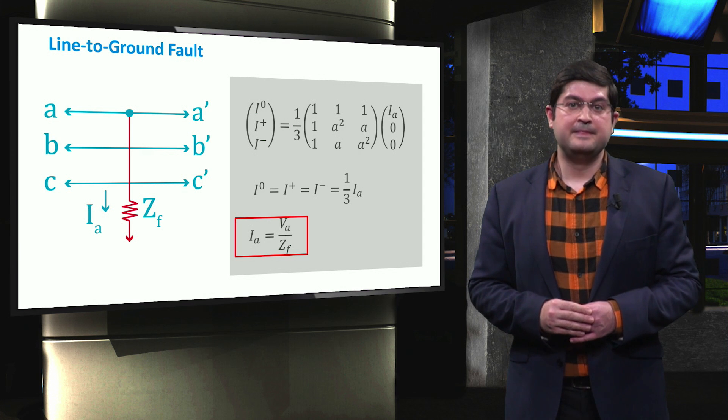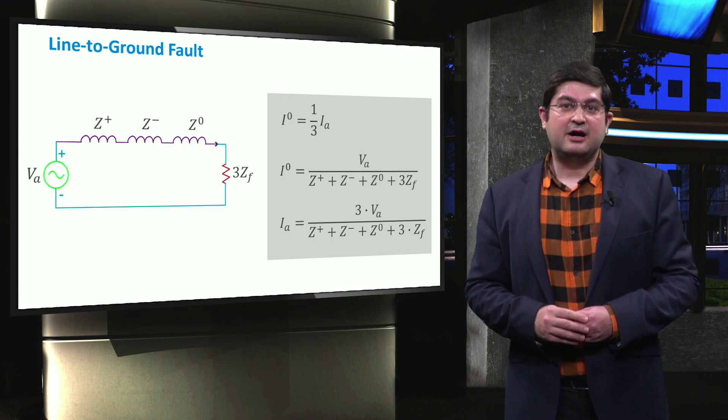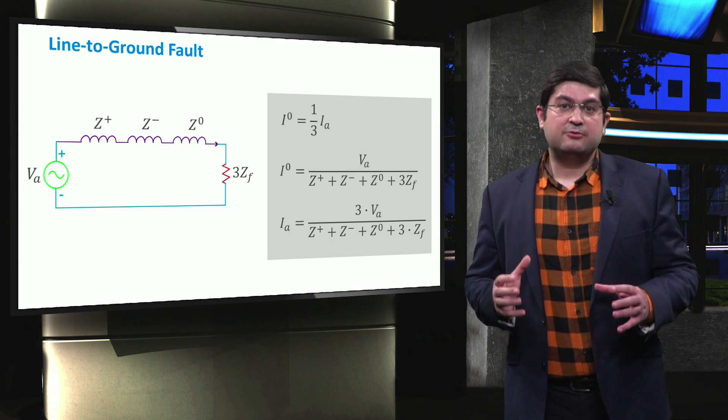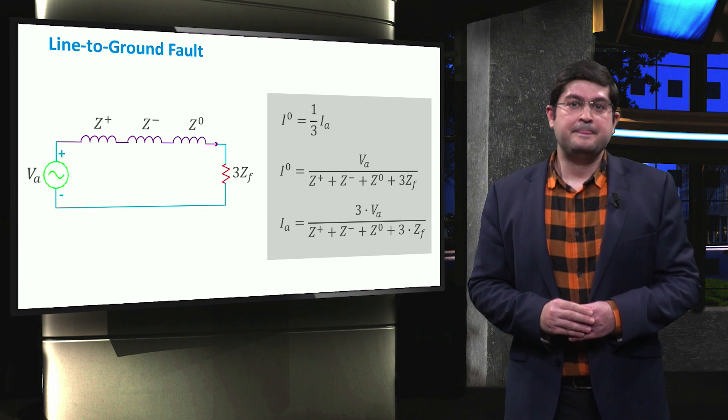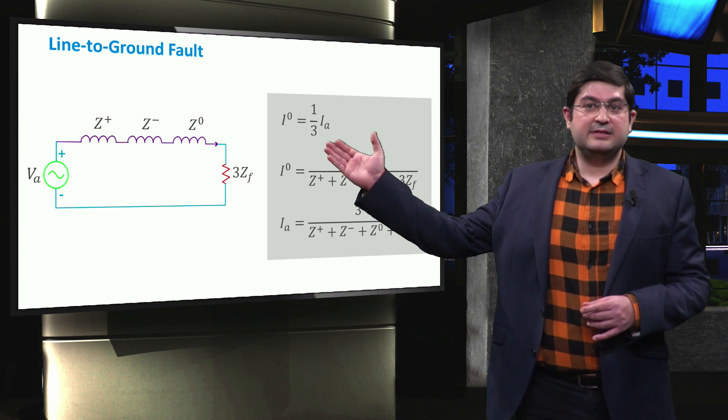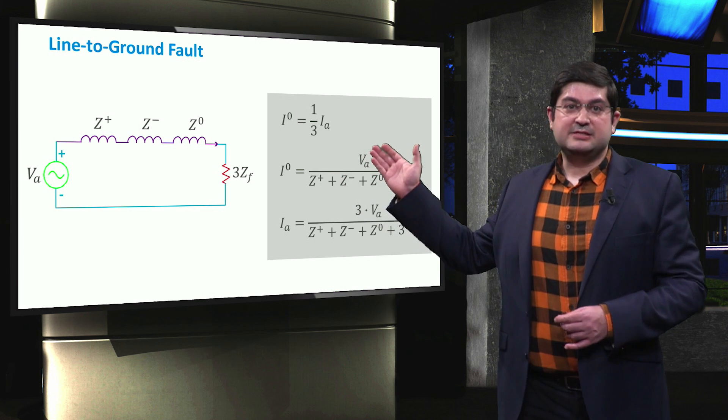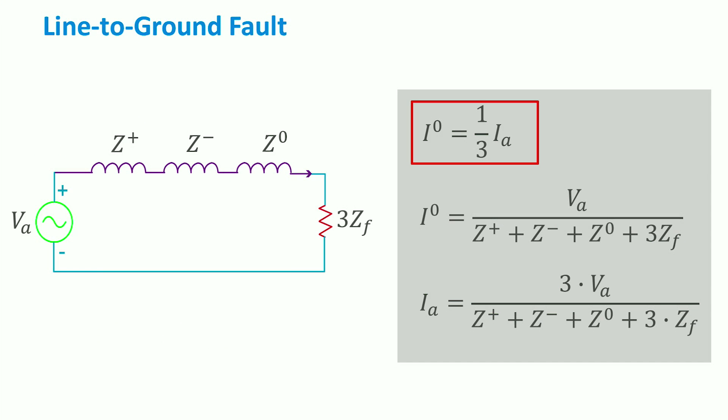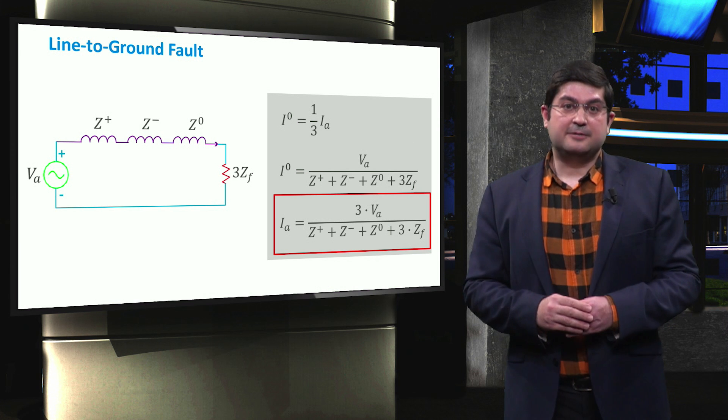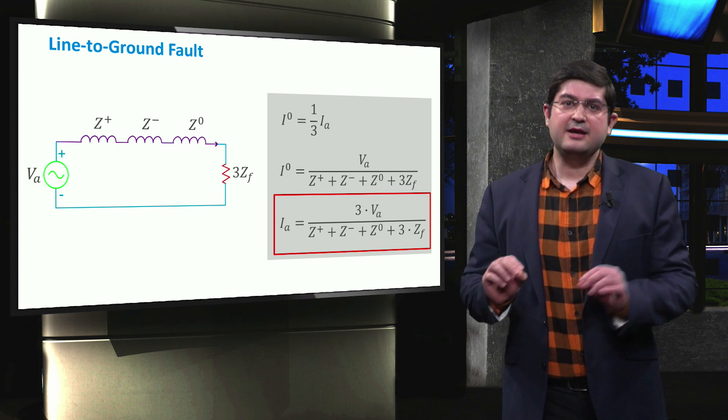In this slide, we show how the inclusion of the line impedance makes the previous calculation more accurate for a line-to-ground fault. We represent the impedances by the positive sequence impedance, negative sequence impedance, and the zero sequence impedance. As we have obtained, the zero sequence current equal to one-third of the fault current in the equivalent circuit, the three times ZF appears. The zero sequence current can then be obtained dividing the voltage of phase A by the sum of the impedances Z plus, Z minus, Z zero, and the three times of ZF. Finally, the fault current is obtained depending on the value of both line and fault impedances.